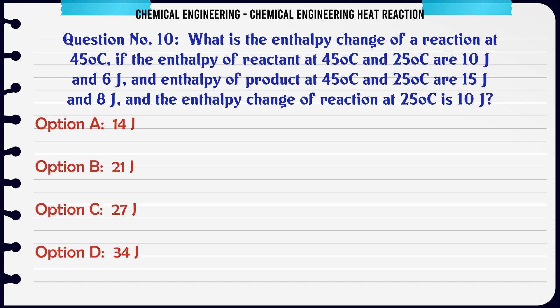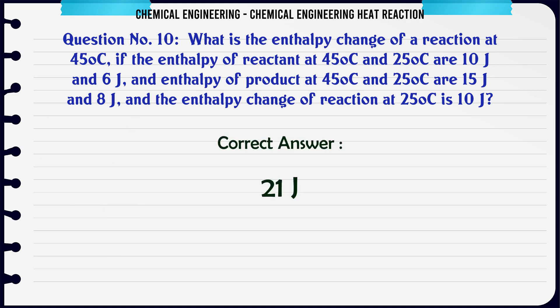What is the enthalpy change of a reaction at 45°C if the enthalpy of reactant at 45°C and 25°C are 10J and 6J, enthalpy of product at 45°C and 25°C are 15J and 8J, and the enthalpy change of reaction at 25°C is 10J? A: 14J, B: 21J, C: 27J, D: 34J. The correct answer is 21J.